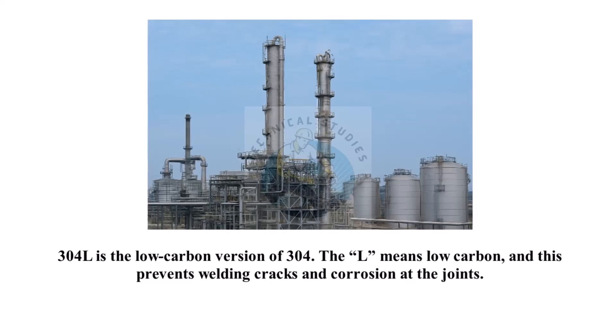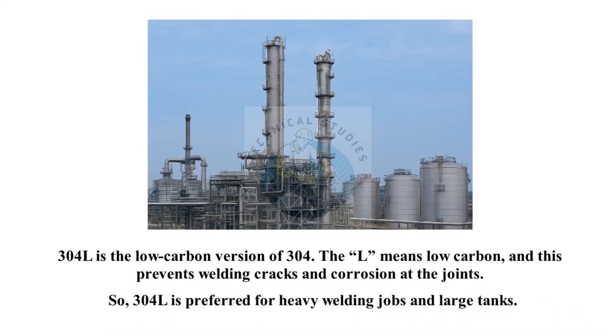304L is the low-carbon version of 304. The L means low-carbon, and this prevents welding cracks and corrosion at the joints. So, 304L is preferred for heavy welding jobs and large tanks.